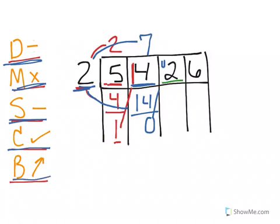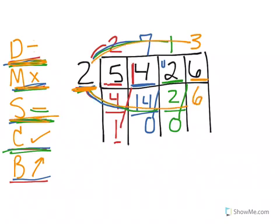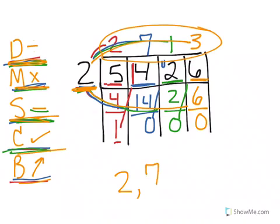Now I'm ready to move on. I have 2 divided by 2 — that is 1. I divide it. Now I multiply: 1 times 2 equals 2. Now I subtract: 2 minus 2 is 0. I check — that is less than 2. I bring up my number. Because it's 0, I really don't have to bring it up, and since I don't have room here, I'm just going to leave it. So now I have 6 divided by 2 — that would be 3. I divide it. Next I multiply: 3 times 2 equals 6. Then I subtract: 6 minus 6 is 0. I check. My answer is 2,713.